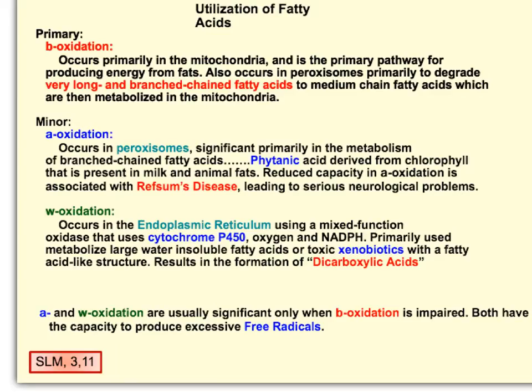It's important to note, especially clinically, that there are three ways to oxidize a fatty acid. Beta-oxidation is the primary way that fatty acids are broken down, and the other minor ways are alpha-oxidation and omega-oxidation.